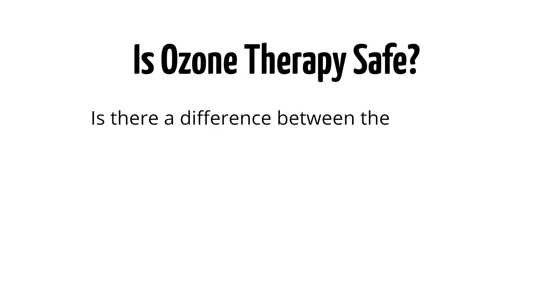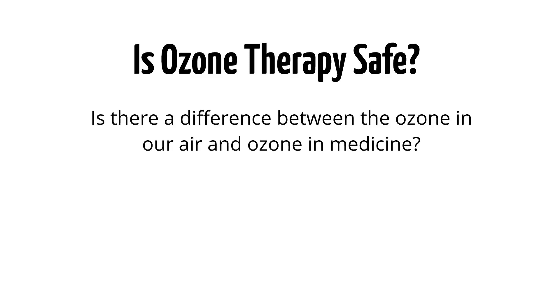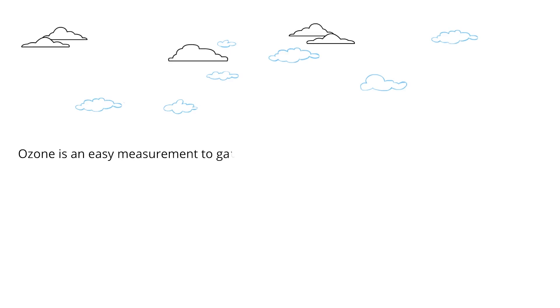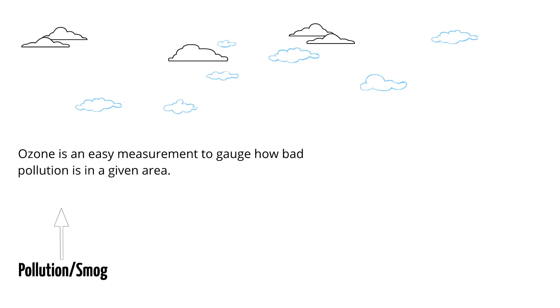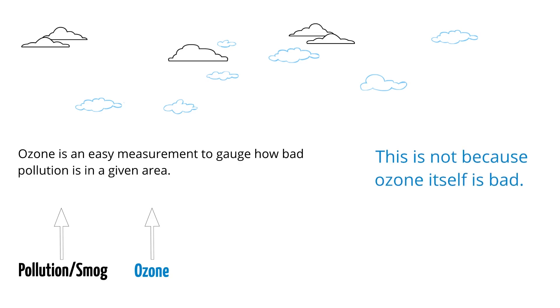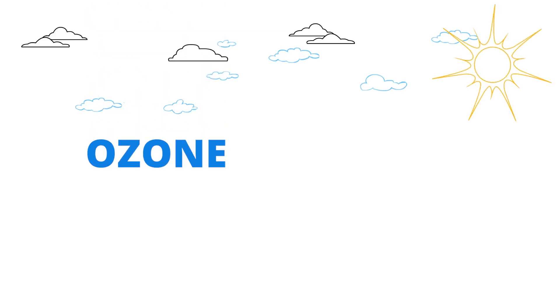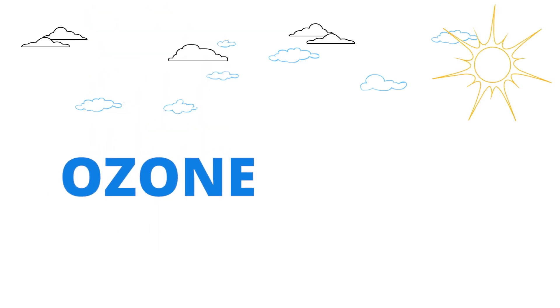Is there a difference between the ozone in our air and ozone in medicine? Without a doubt. The ozone you hear about on television is found naturally in our atmosphere. It gets a bad rap sometimes because it's an easy measurement to gauge how bad pollution is in a given area. Typically when pollution or smog levels are high, the ozone level is high. This is not because ozone itself is bad — it's because the sun interacts with hydrocarbons and pollution in the air, creating ozone as a byproduct to help neutralize the pollution.